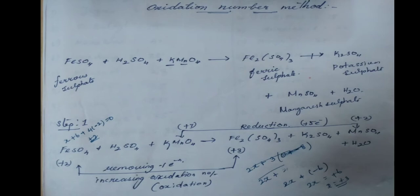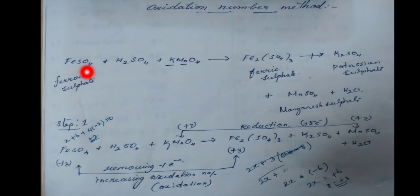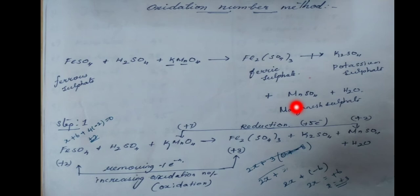This is a very important method. Oxygen oxidation number method: ferrous sulfate reacts with KMnO4 and a small amount of sulfuric acid to form ferric sulfate, potassium sulfate, manganese sulfate, and water molecules.